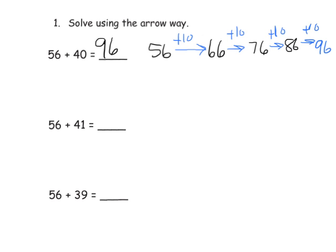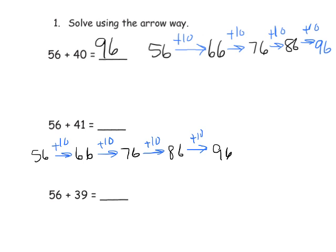All right. Continuing that theme, let's do 56 plus 41. And again, we're going to still use the arrow method, although there are other ways to do it. But let's start with 56. And we're going to add by 10. That gives us 66. Add another 10. That gives us 76. We're going to add another 10. That gives us 86. We're going to add another 10. That gives us 96. And so far we've added 40. Now we have to add just one more. So now we're going to add by one. And that gives us 97. And so our answer is 97.